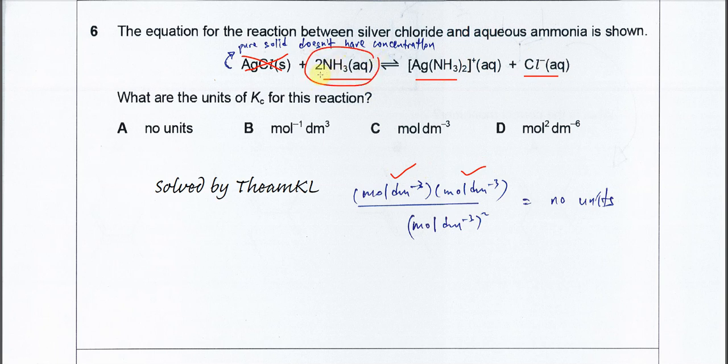Ammonia has coefficient 2, so it's mole per dm cubed squared. Just do the cancellation - everything cancels out. That's why it's no units. The answer is A. That's all, thank you.